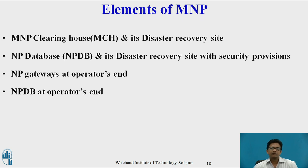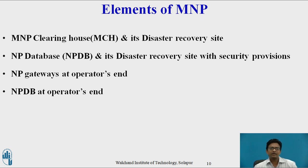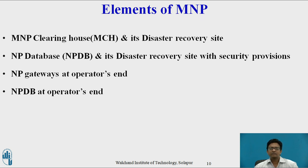The elements of MNP include the clearing house (MCH) and its disaster recovery site. MCH shall receive an MNP request from a recipient operator and forward it to the donor operator for verification. The NP database and its disaster recovery site include security provisions — MCH sends all details to the number portability database and updates its own database with the appropriate routing number, also known as the Location Routing Number (LRN). It uses a logical centralized database with regionally located databases, set up and managed by third-party operators, and this logical centralized approach may serve as a common platform for ordering, provisioning, and notification processes.